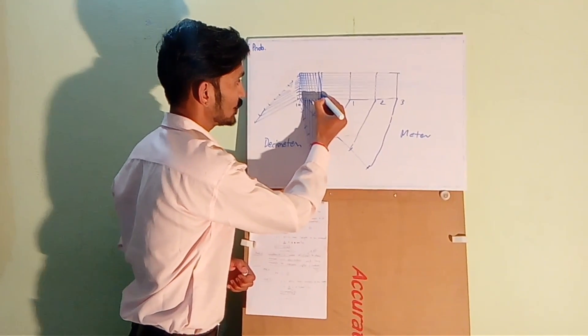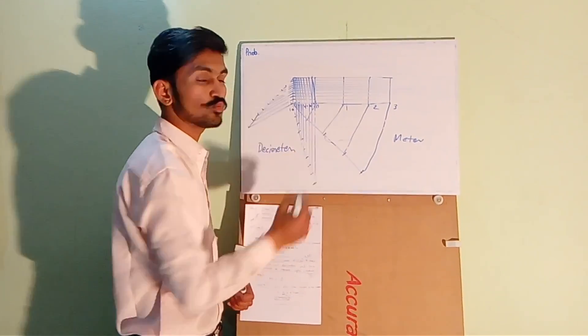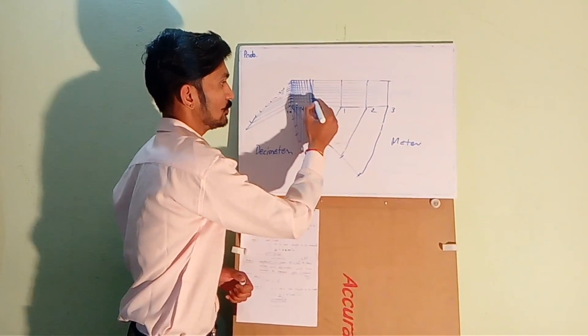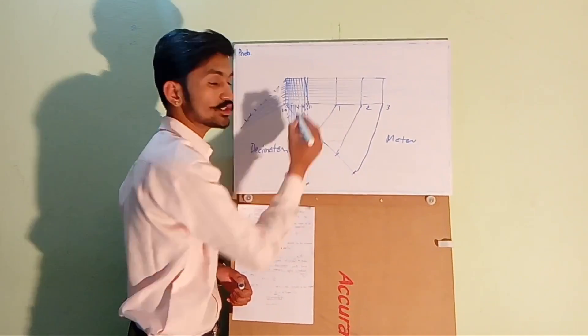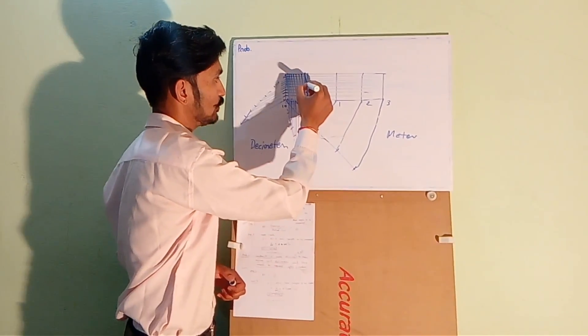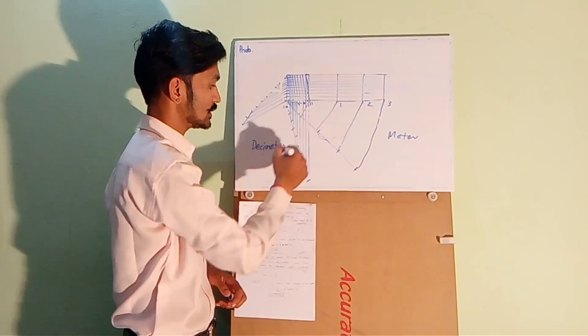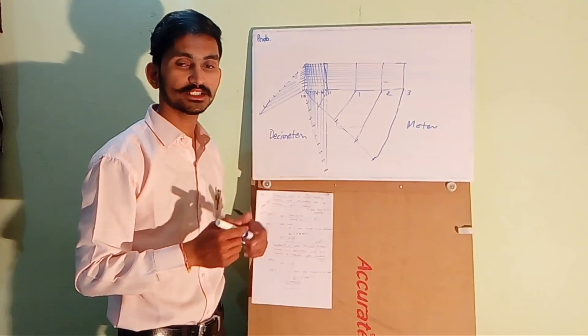So this line is dividing 1 decimeter into 10 equal parts. Here it is 0. When this line intersects this line, this first line, the distance is 1 centimeter. And at the point where this line intersects the second line, the distance is 2 centimeter. From 3, 4, 5, 6, 7, up to 9 and 10. So here it is 10 centimeter which is equal to 1 decimeter.